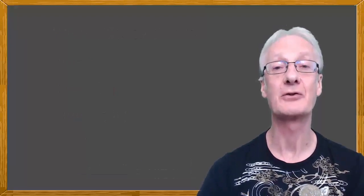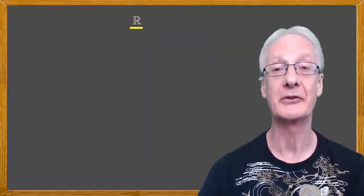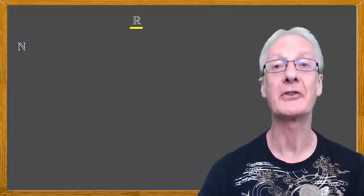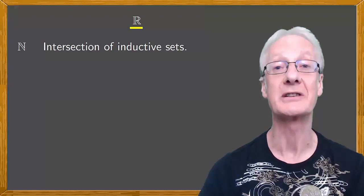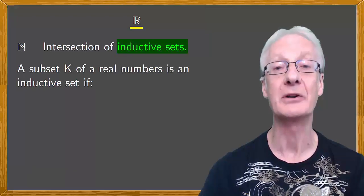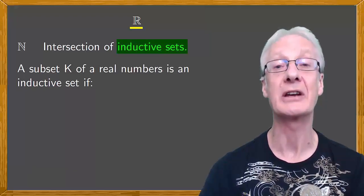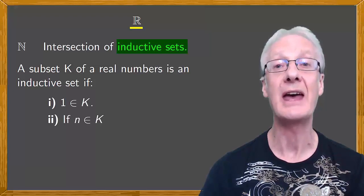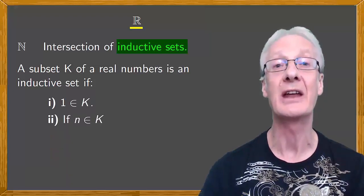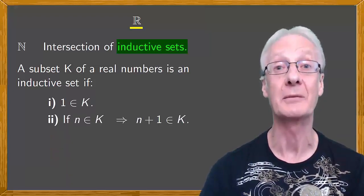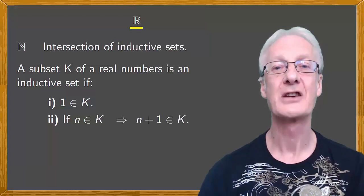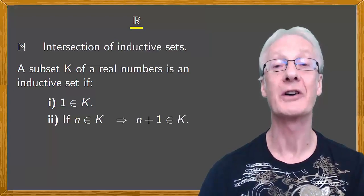A different definition of natural numbers, starting from real numbers, is that natural numbers are the intersection of inductive sets. What's an inductive set? A subset K of real numbers is an inductive set if it contains one, and if n is an element of K, then n plus one is also an element of K.